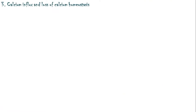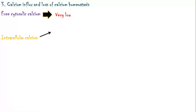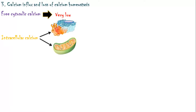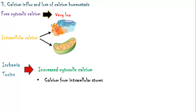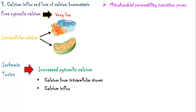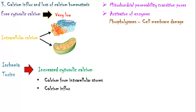The third mechanism of cell injury is calcium influx and loss of calcium homeostasis. Normally, free cytosolic calcium concentration is maintained at a very low level. Due to ischemia and certain toxins, cytosolic calcium levels can increase, initially from release of calcium from intracellular stores — the endoplasmic reticulum and mitochondria — followed by calcium influx through the cell membrane. Increased calcium levels damage mitochondria and form permeability transition pores. Calcium acts as an activator for many enzymes, including phospholipases, which cause cell membrane damage.